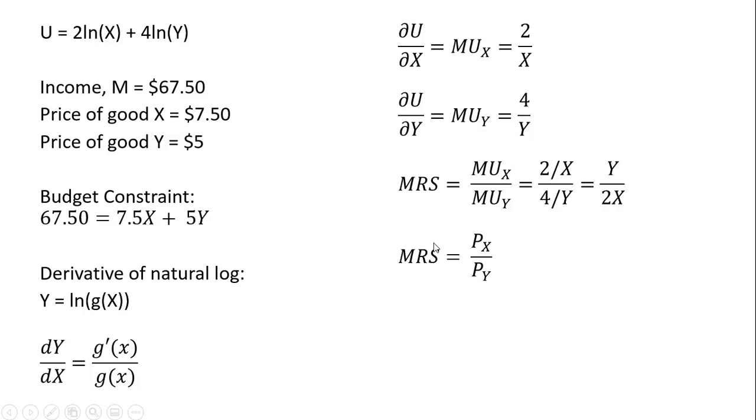Setting this marginal rate of substitution equal to the price of good X divided by the price of good Y, plugging in our prices, and we're just going to solve this for Y. We're going to get Y equals 3X.